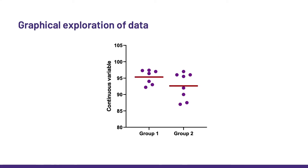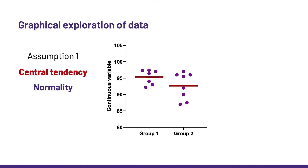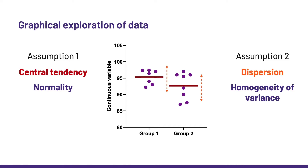If we want to apply any parametric tests, such as the t-test for instance, we are talking about continuous data. Tests from the parametric family are happy to deal with data which behave in a particular way, and that's what the assumptions are about. The first one is normality, which is, among other things, about the central tendency, or how we can best summarize data. And the second one is about homogeneity of variance — the dispersion of the data, or how noisy they are, and more importantly, if they are noisy in a similar way within the different groups.